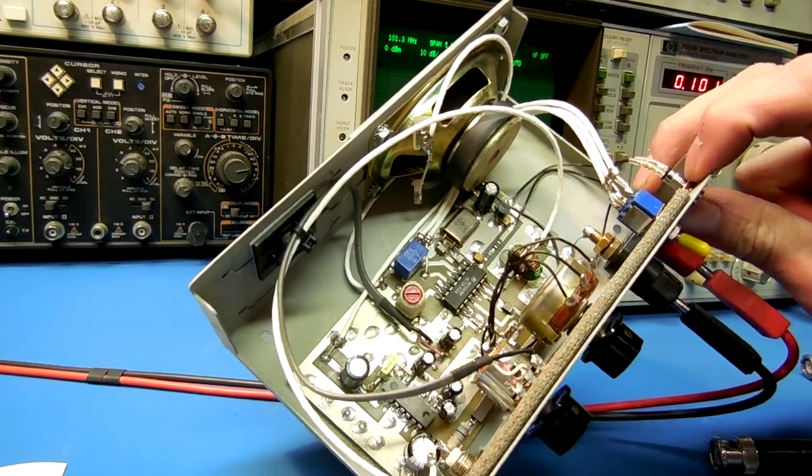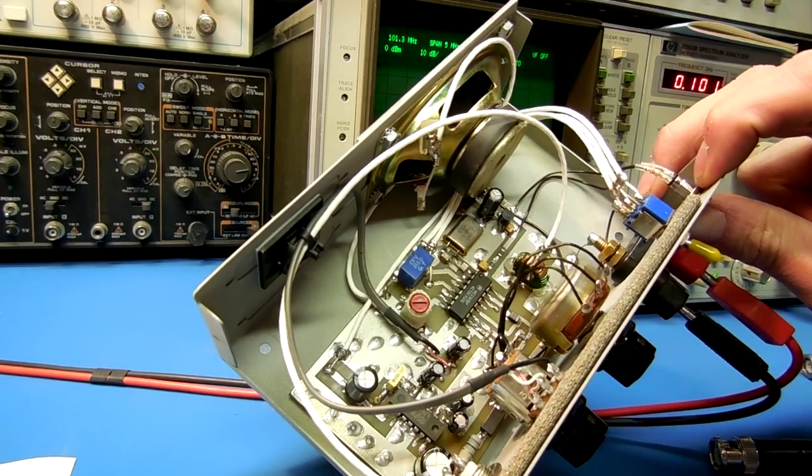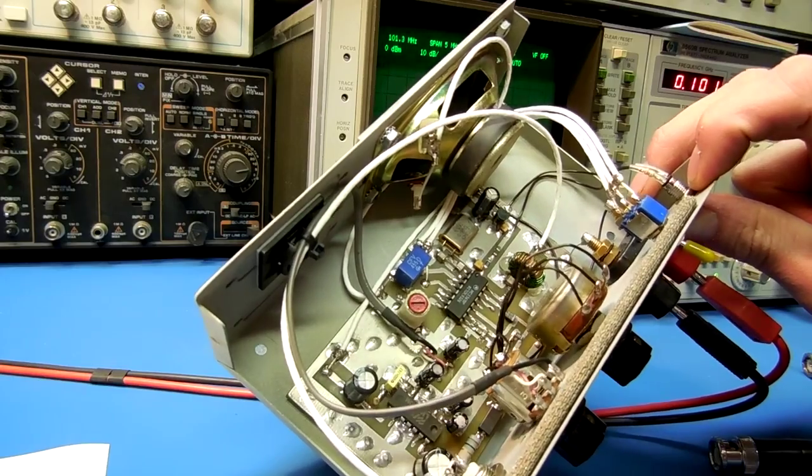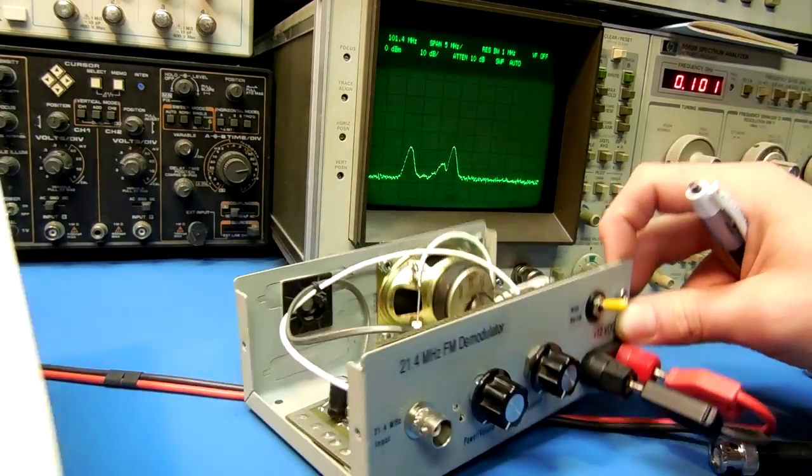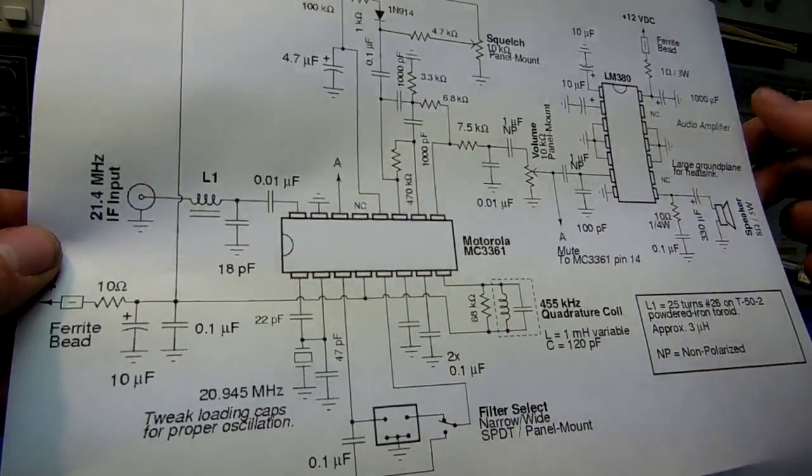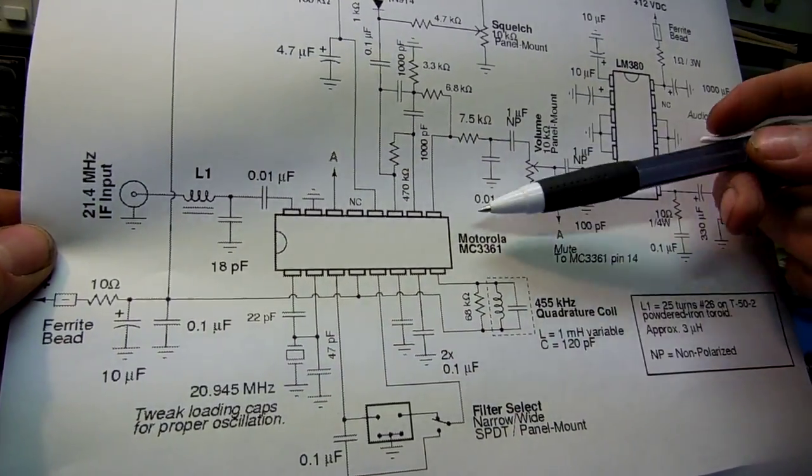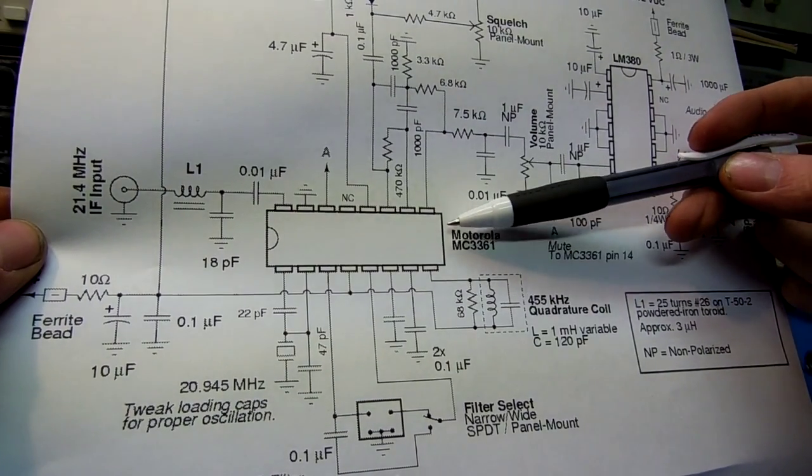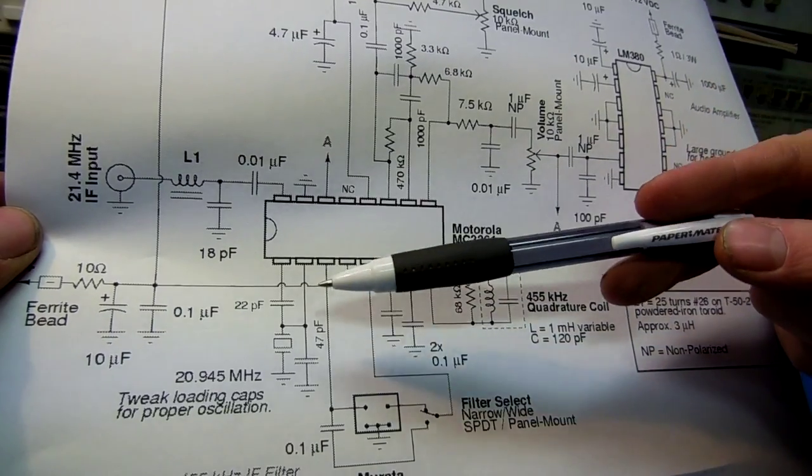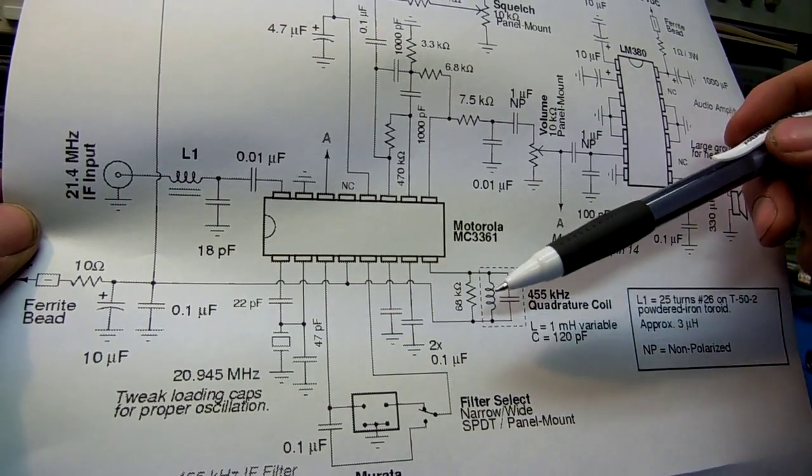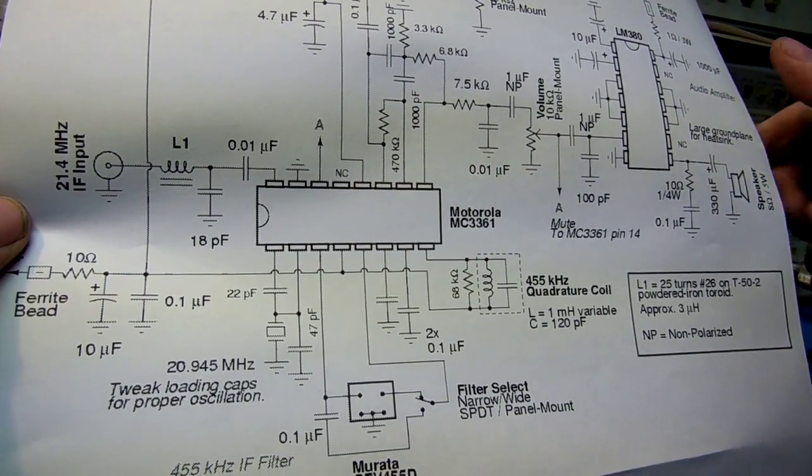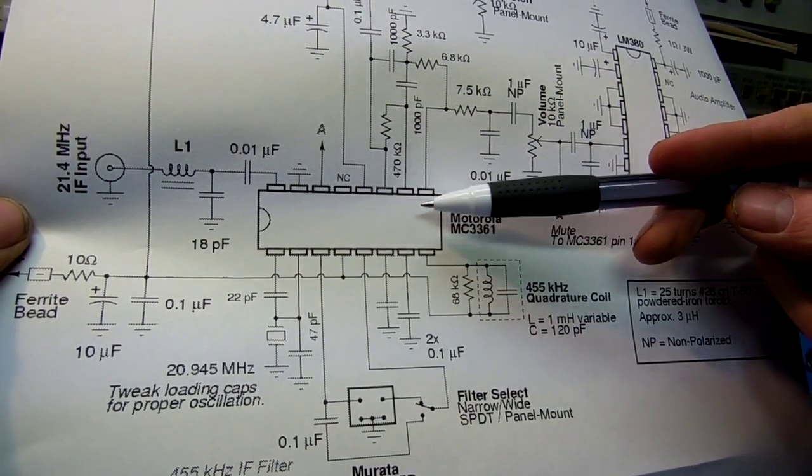It's a very simple design based around a Motorola 3361 narrowband FM IF chip. Here's the schematic. Here's the Motorola MC 3361. This does the majority of all the work. It does the local oscillator generation and the limiting FM limiting with the quadrature coil and it gives an output signal.